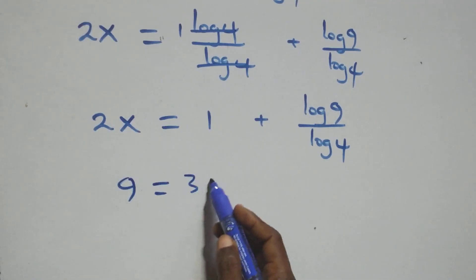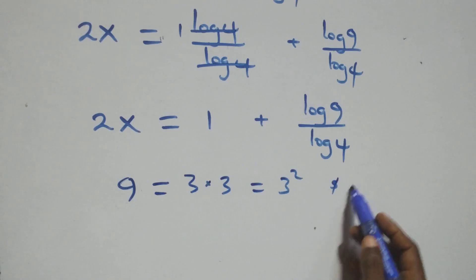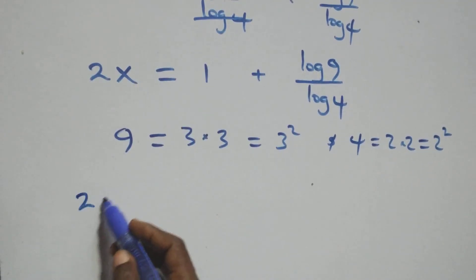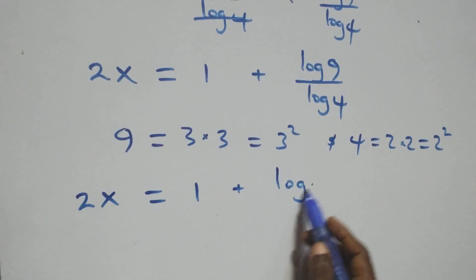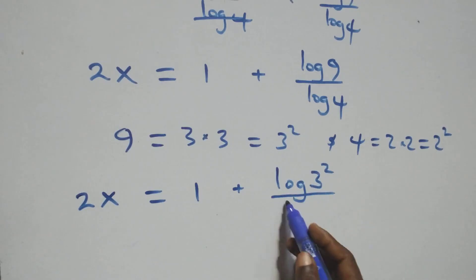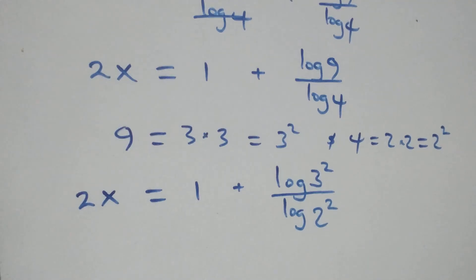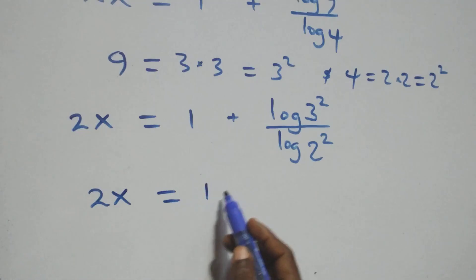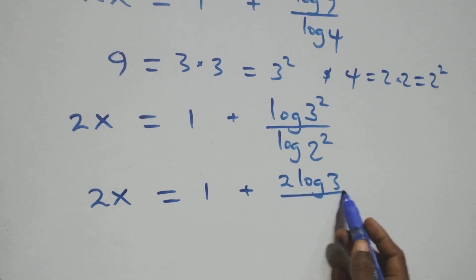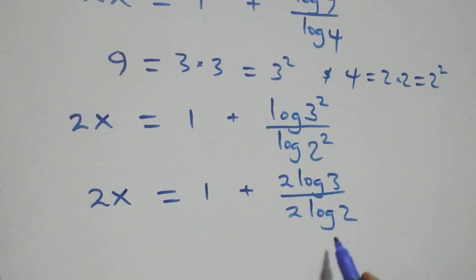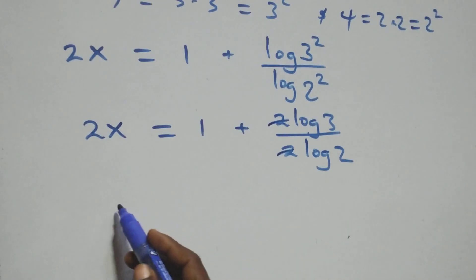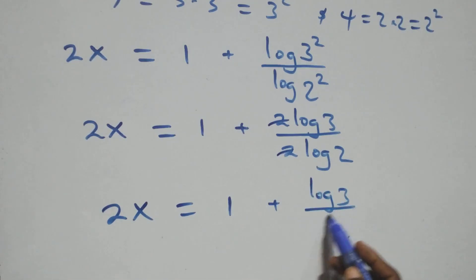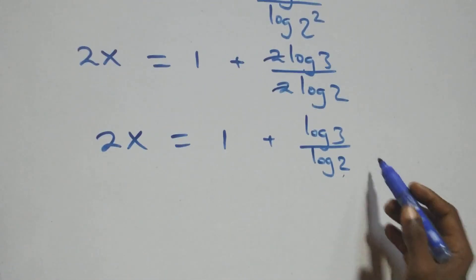Then 9 can be expressed as 3 times 3, which is the same thing as 3 squared, and also 4 as 2 times 2, which is the same thing as 2 squared. So we have 2x equals 1 plus log(3²) over log(2²). We apply the power rule of logs — the 2 comes down — giving 2x equals 1 plus 2·log 3 over 2·log 2. The 2s cancel, so we have 2x equals 1 plus log 3 over log 2.